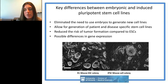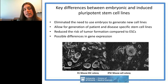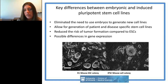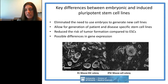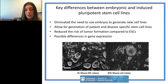To highlight key differences between embryonic and induced pluripotent stem cells: iPSCs eliminated the need to use embryos to generate new cell lines, which was a controversial issue especially in the United States where stem cell lines were restricted. This seemed less ethically controversial. You can also make patient-specific cell lines. Groups in Japan are working on iPSC banks for this purpose.